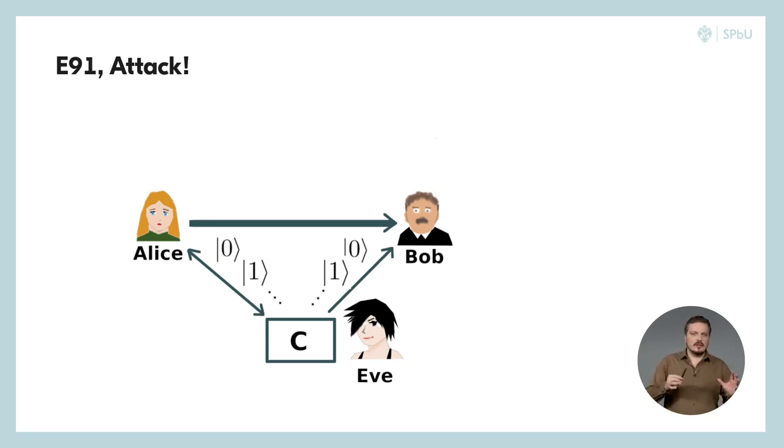Instead of the entangled state 00 plus 11, she randomly prepares states 00 or 11 for each bit, and then sends photons to Alice and Bob. So, they still would have the same result for each measurement, but Eve would know it, since she prepared it.